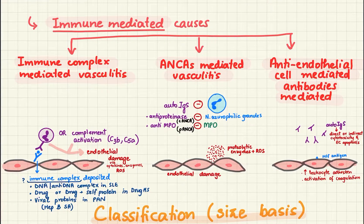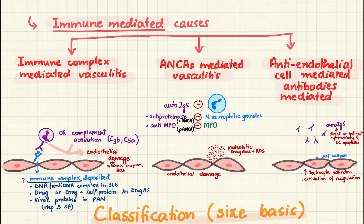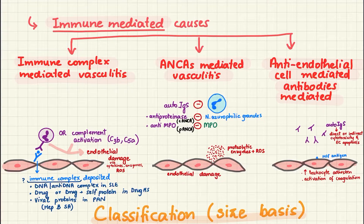Immune-mediated causes include: immune complex-mediated vasculitis, where immune complexes are deposited leading to neutrophil and complement activation causing endothelial damage; ANCA-mediated, where anti-neutrophilic cytoplasmic antibodies are formed against either the azurophilic granules or the myeloperoxidase enzyme of neutrophils, leading to endothelial damage via proteolytic enzymes and reactive oxygen species; and lastly, anti-endothelial cell antibodies directed against self-antigens of the endothelial cells.